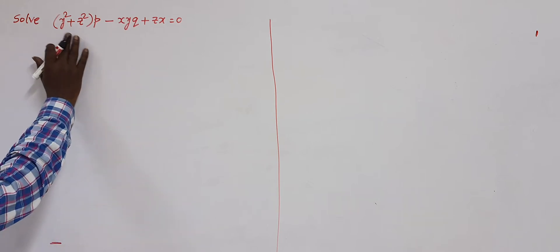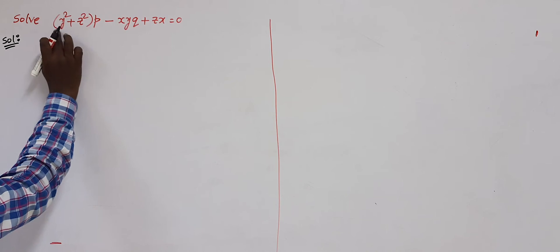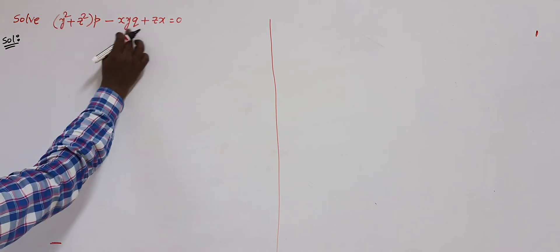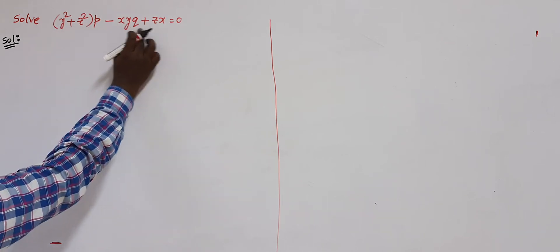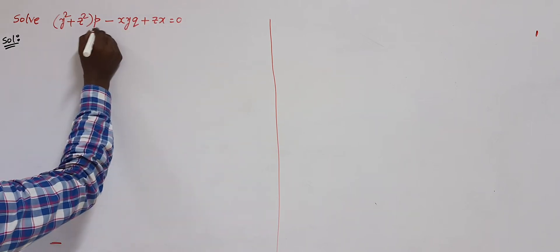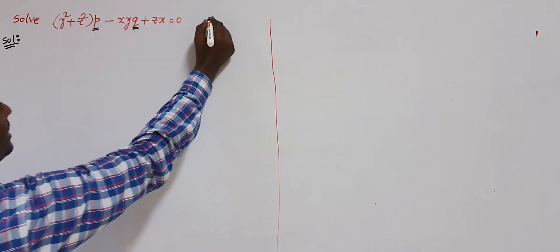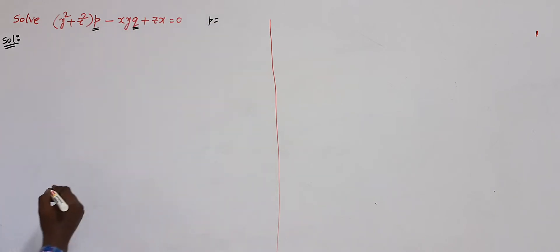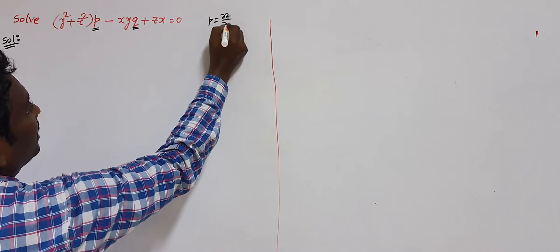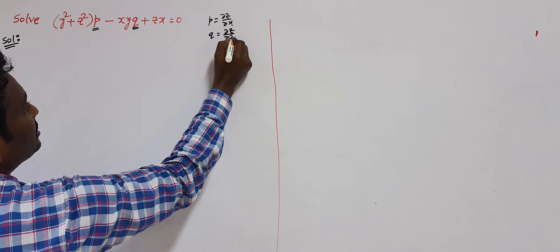Here is another example — see the statement: Solve (y² + z²)p − xy·q + zx = 0. As you already know from earlier videos, in the concept of partial differential equations, small p represents ∂z/∂x and small q represents ∂z/∂y.